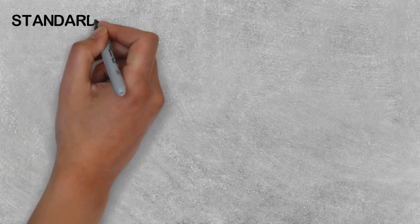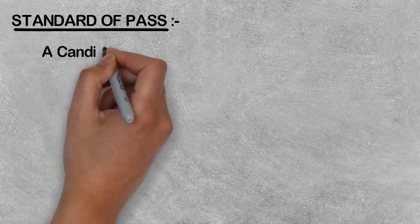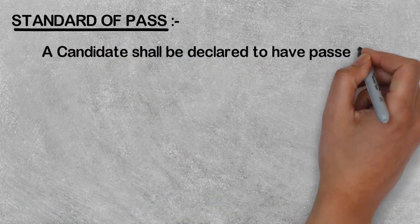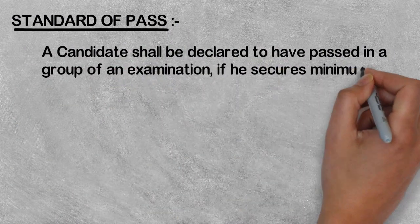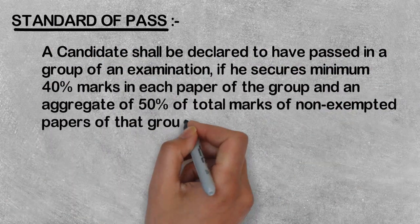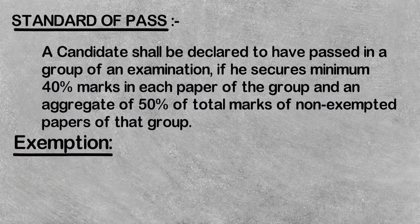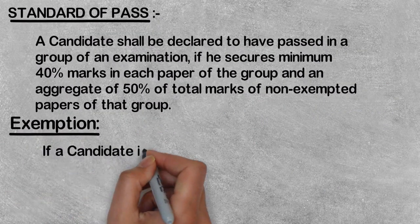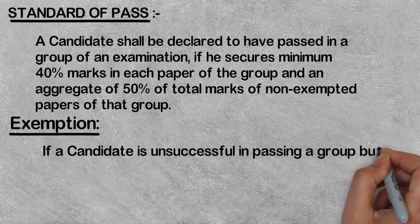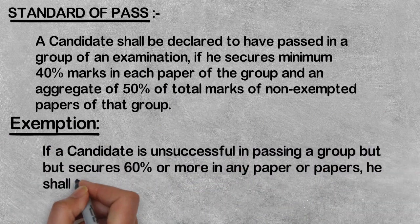To pass the Intermediate and Final courses, you need a minimum of 40% marks in each paper and 50% aggregate marks. If a student fails but scores 60% or more in any particular paper, they will not need to give that paper again.